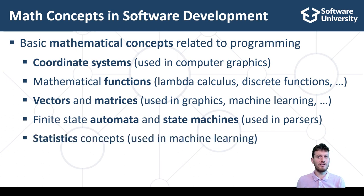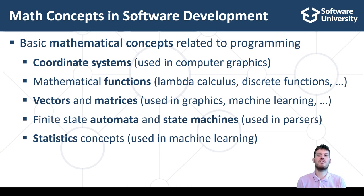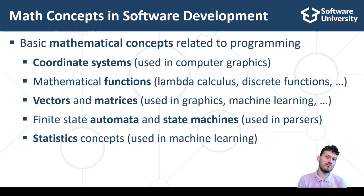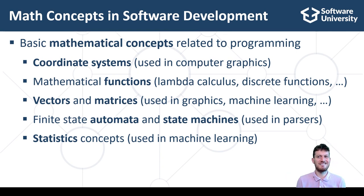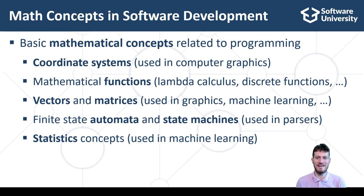Statistics concepts such as probability distribution, statistical significance, hypothesis testing and regression are widely used in data science and machine learning. In machine learning, data science and artificial intelligence systems, math skills are more important. But in traditional mainstream web, mobile and backend development, we need nothing more than school level math and logical thinking.